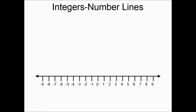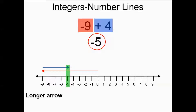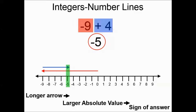We have a number line and we've got negative nine plus four — you can also think of this as nine negatives and four positives. We're going to start at zero. Since our first number is negative nine, we go left nine. Then we apply the positive four, which would be right four, and we end up at negative five. The arrows went in different directions and the longer arrow was the negative number, meaning the negatives had the larger absolute value, so the answer is negative.